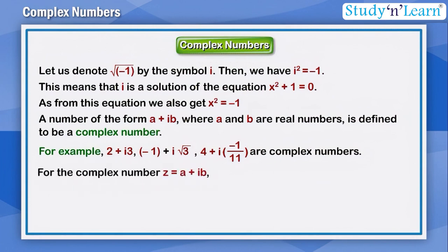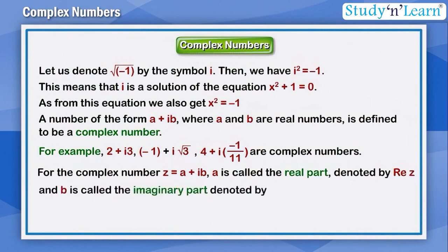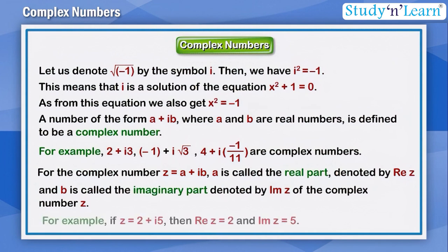For the complex number z = a + ib, a is called the real part, denoted by Re z, and b is called the imaginary part, denoted by Im z of the complex number z. For example, if z = 2 + i5, then Re z = 2 and Im z = 5.